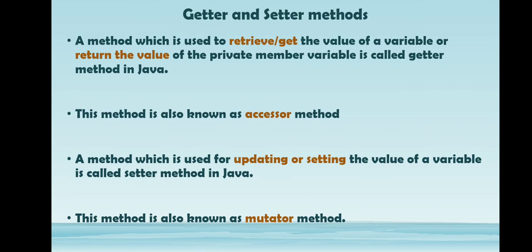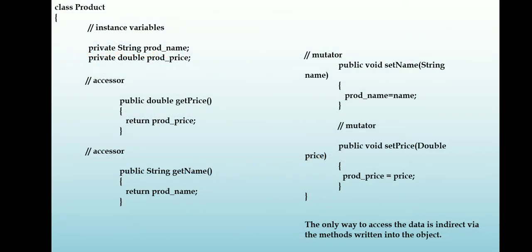Now we may have a question. What is the need for getter and setter methods? Getter and setter methods actually act as a public interface to access your member variables. So through this accessor method and mutator method, you are actually giving read only permission and write only permission to the user.